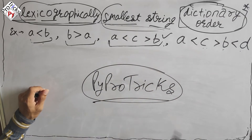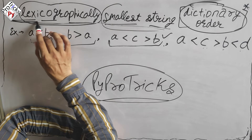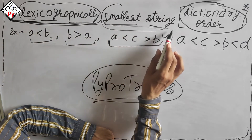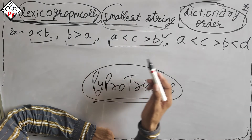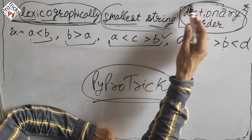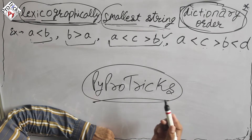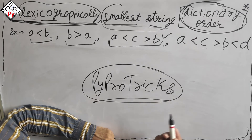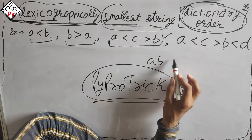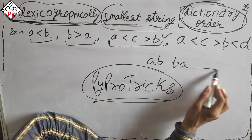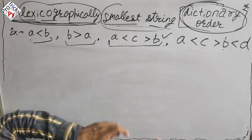Subscribe to PyProtrix if you haven't. In this video we are going to solve the question: lexicographically smallest string. A lexicographically smallest string means the letters are arranged in dictionary order — like in the dictionary, alphabets are arranged the same way: 'a' comes first, then 'b', and so on.